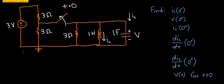Alright, so here's our problem. We've got a 3-volt battery, two 3-ohm resistors, a switch that opens at time equal to zero, another 3-ohm resistor, a 1-Henry inductor, and a 1-Farad capacitor. The problem asks for the current through the inductor at zero-plus, the voltage across the capacitor at zero-plus, the current through the capacitor at zero-plus, dI/dt for the inductor at zero-plus, dI/dt for the capacitor at zero-plus, and finally V(t) for time greater than zero.